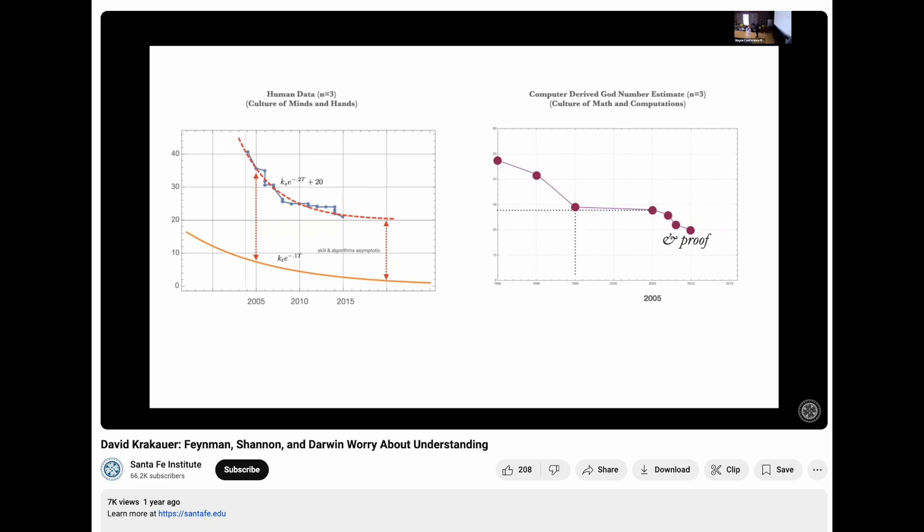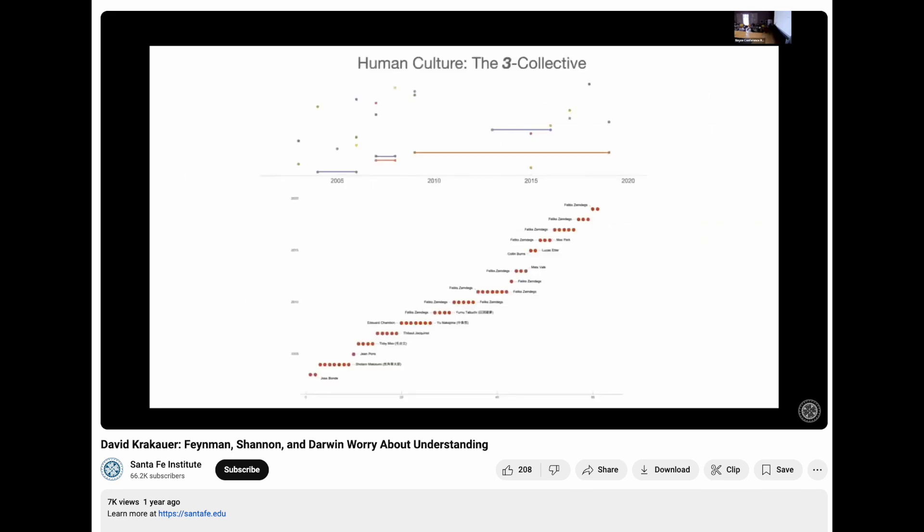And that's actually part of the problem for how you make fair competition, right? But what is that blue line? That blue line is these people. That blue line is actually an integration of a collective. I call it the 3-collective. Every cube has a collective.